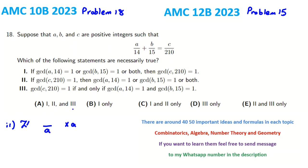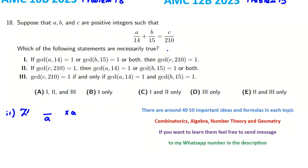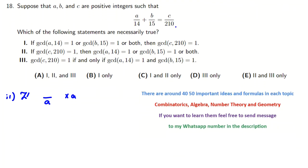So when we have, for example, this multiplied by A. Here, because we have 14, 15, and 210, I want to get rid of denominators. So I should multiply both sides by what? 210, because 210 is 14 times 15. So it will be 15A plus 14B equals C.